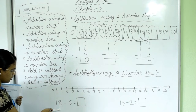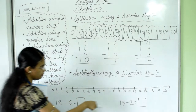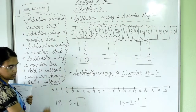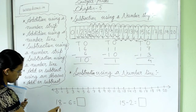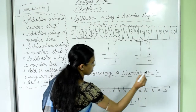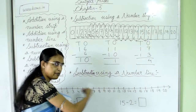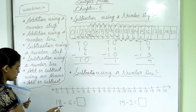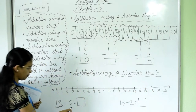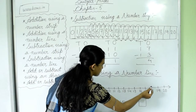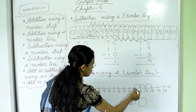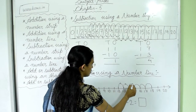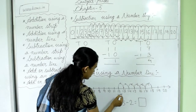In subtraction, first look at the first number, find it on the number line, and stand there. Here it is written 18 minus 6. In subtraction, we start from 18 because we come back, not go forward. From 18, take 6 back steps: 1, 2, 3, 4, 5, 6. We are now at 12. So 18 minus 6 equals 12.